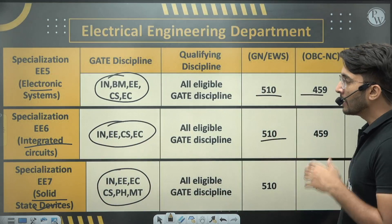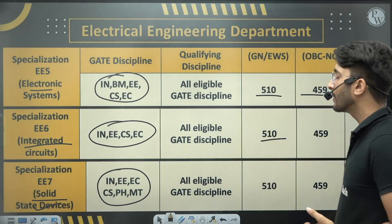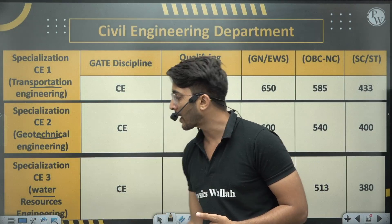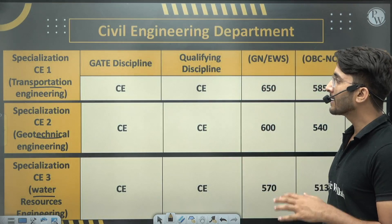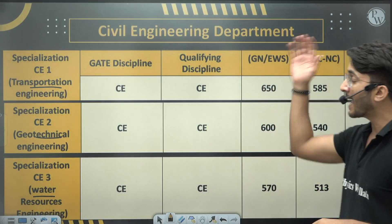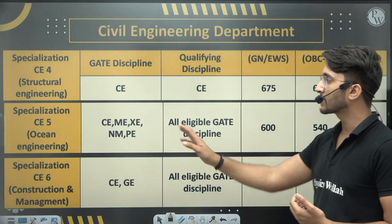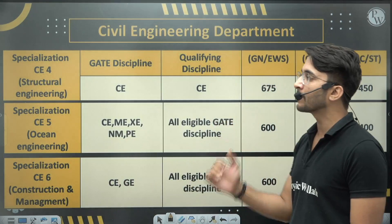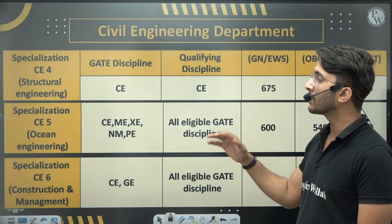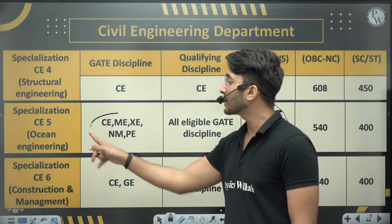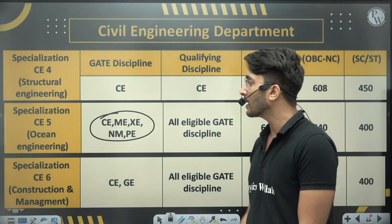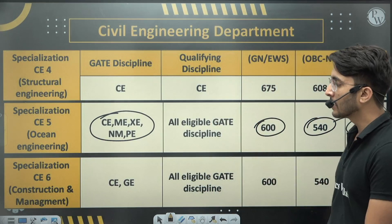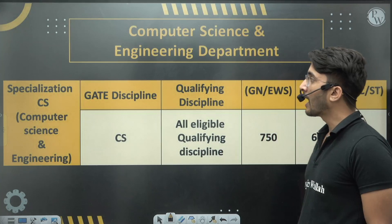Try to secure a GATE score above the listed cutoffs if IIT Bombay is your dream. For Civil Engineering, popular M.Tech courses include Transportation, Geotechnical, Water Resources, and Structural Engineering. Ocean Engineering is an interdisciplinary course where Civil, Mechanical, NM, and PE discipline students are eligible. Construction Management is also available.